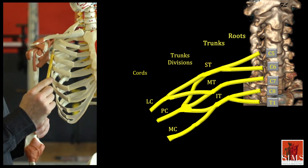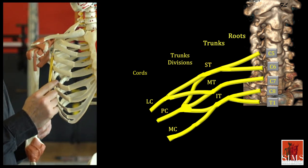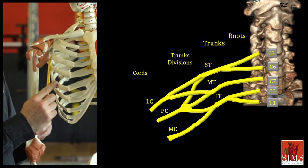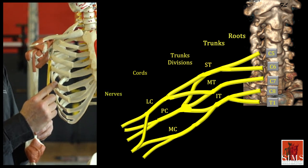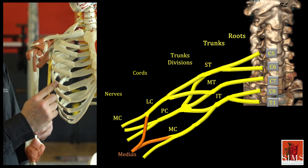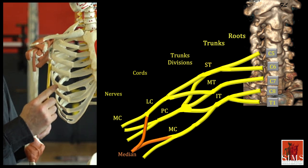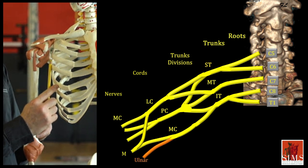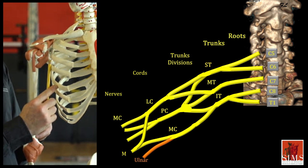These cords enter the tunnel of the pectoralis minor, then the axilla, to once again branch out, giving rise to the terminal nerves. The musculocutaneous nerve arises from the lateral cord, the median nerve from the lateral and medial cords, and the ulnar nerve from the medial cord only. The posterior cord gives rise to the radial nerve and the axillary nerve.